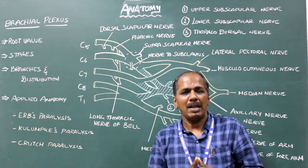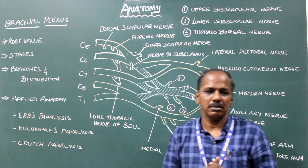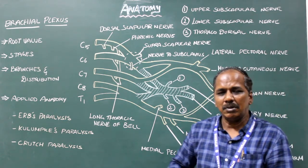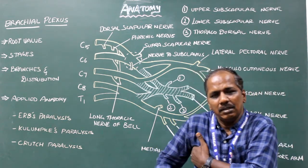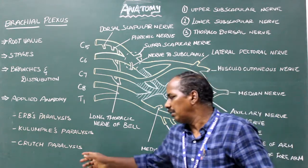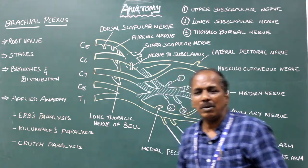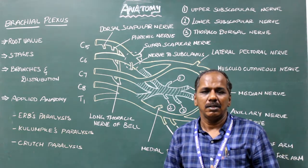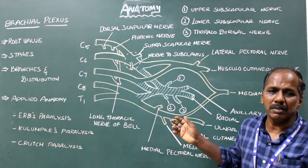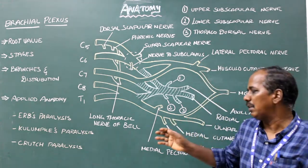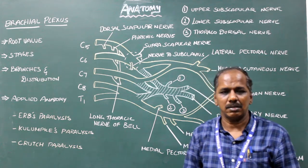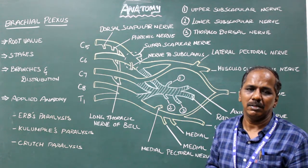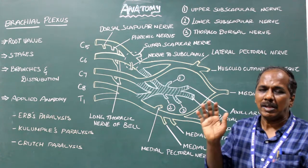Crutch paralysis. Due to pressure of the crutch, the posterior cord is mainly affected — especially the radial nerve is injured in crutch paralysis. Injury to the radial nerve results in wrist drop.